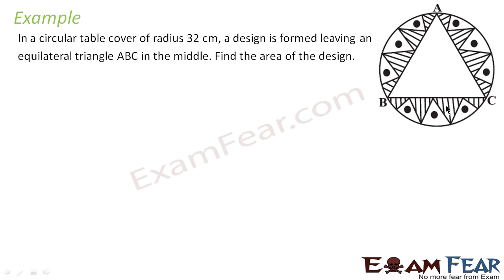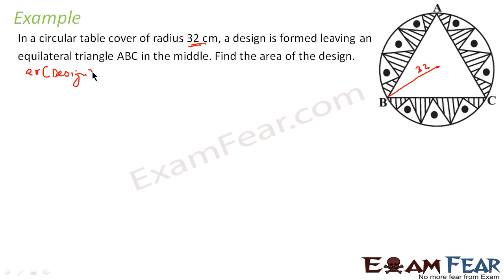Let us take one more complicated example. In a circular table covering of radius 32 centimeter, a design is formed leaving an equilateral triangle in the middle. We have to find the area of the design. This is a very simple question if you see it clearly. Area of design is nothing but area of circle minus area of triangle ABC.